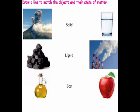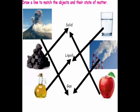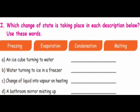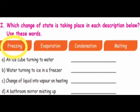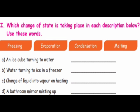Children, match this — draw a line to match the objects and their states of matter. After matching, check the answers. Next, which change of state is taking place in each description? An ice cube turning to water — the answer is melting. Water turning to ice in a freezer — the answer is freezing. Change of liquid into vapor on heating — the answer is evaporation. A bathroom mirror misting up — the answer is condensation.